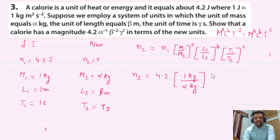No need to write power 1. [1 meter / β meter]² [1 second / γ second]^(-2). This is l's power which is 2, and this becomes minus 2.